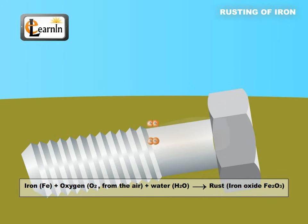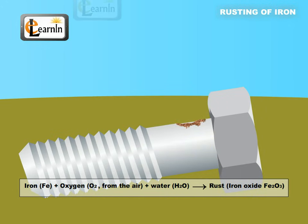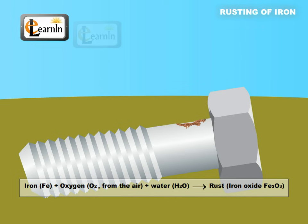Water and oxygen are essential for rusting. If there is more humidity in the atmosphere, then the rusting hastens.